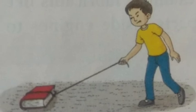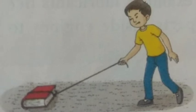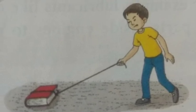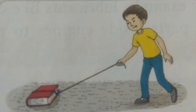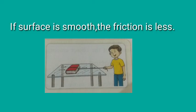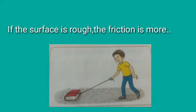We can compare the force applied in both cases. We will find that more force was applied while pulling the book on the rough surface of the floor, because of the greater friction posed by the rough surface. So the conclusion is: if the surface is smooth, the friction is less; and if the surface is rough, the friction is more. This is all about frictional force.